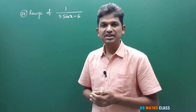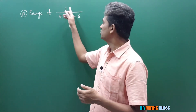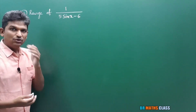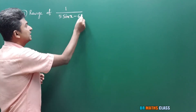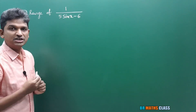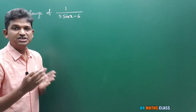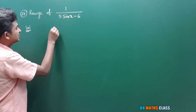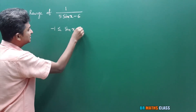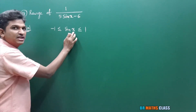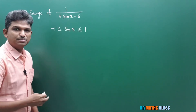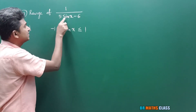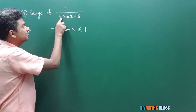You observe question number 17. We need to find the range of 1 divided by (5sinx minus 6). I will first find which interval 5sinx minus 6 lies in. The range of sinx is the closed interval [minus 1, 1], so sinx lies between minus 1 and plus 1. To get 5sinx, I will multiply this complete inequality by 5. Since 5 is positive, the inequality remains the same: minus 5 ≤ 5sinx ≤ 5.